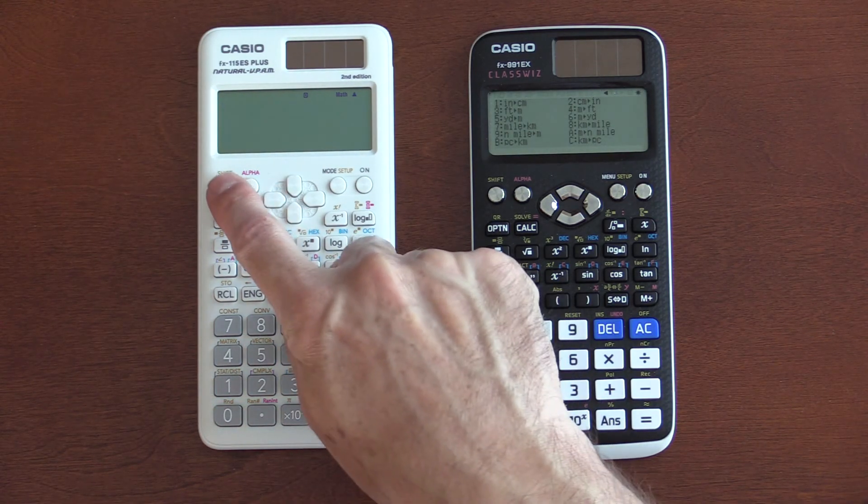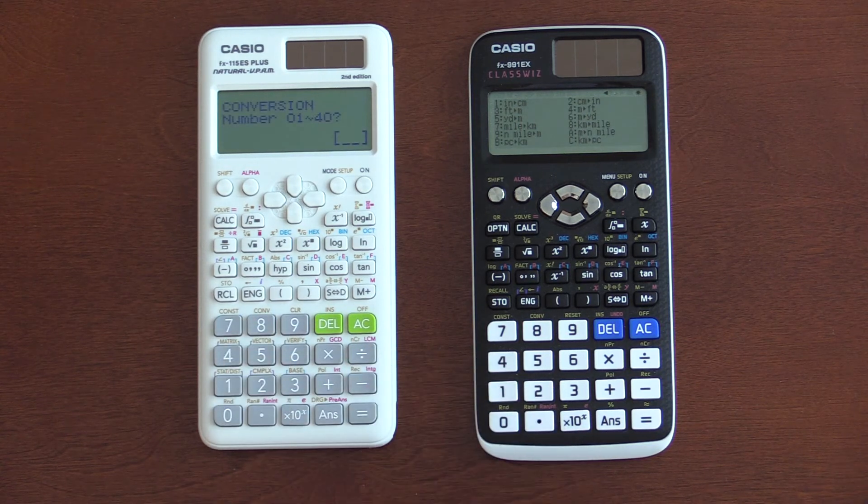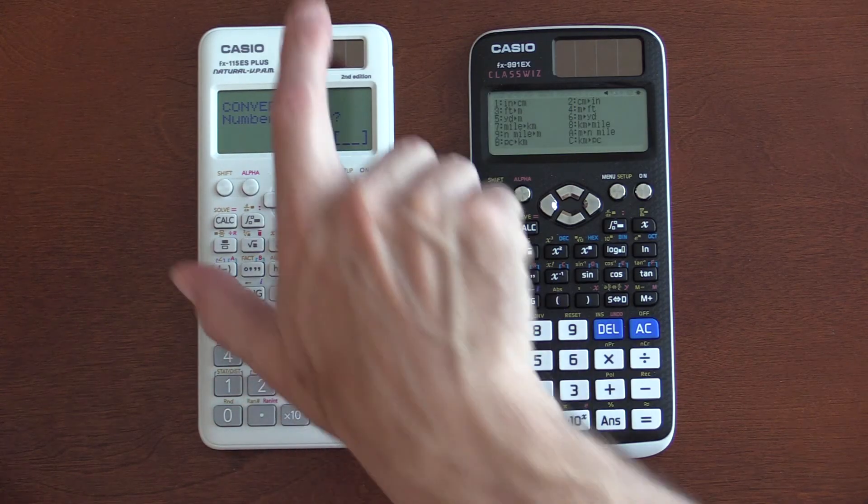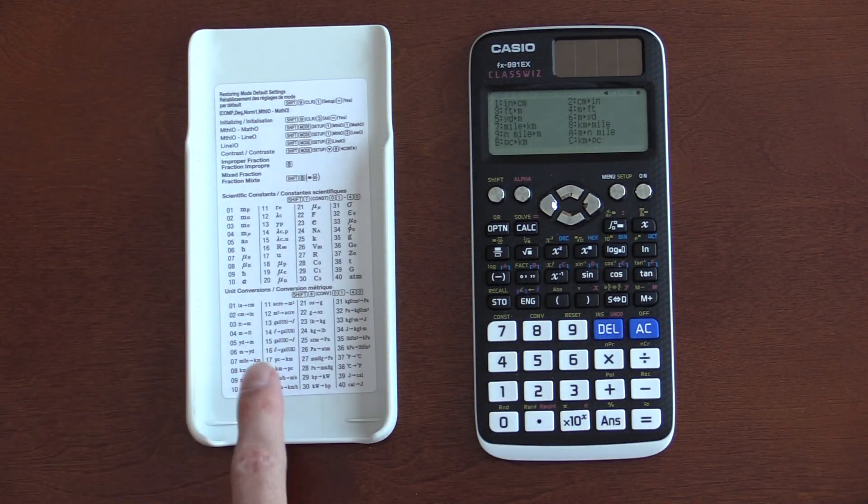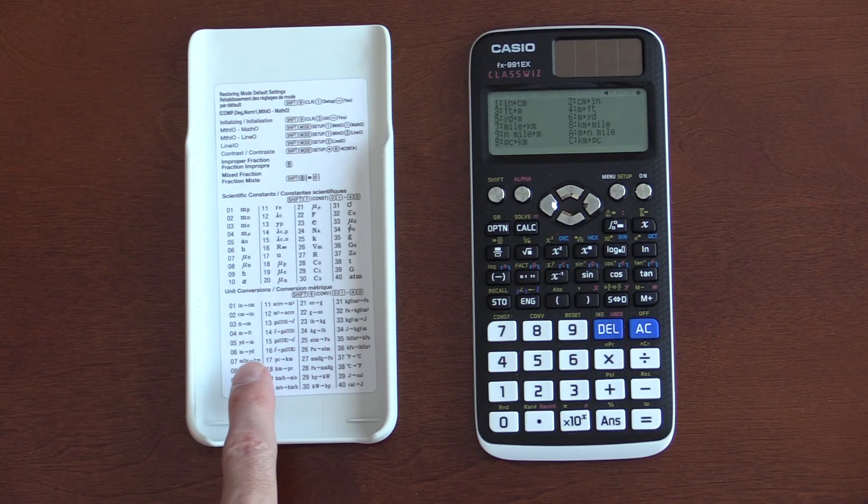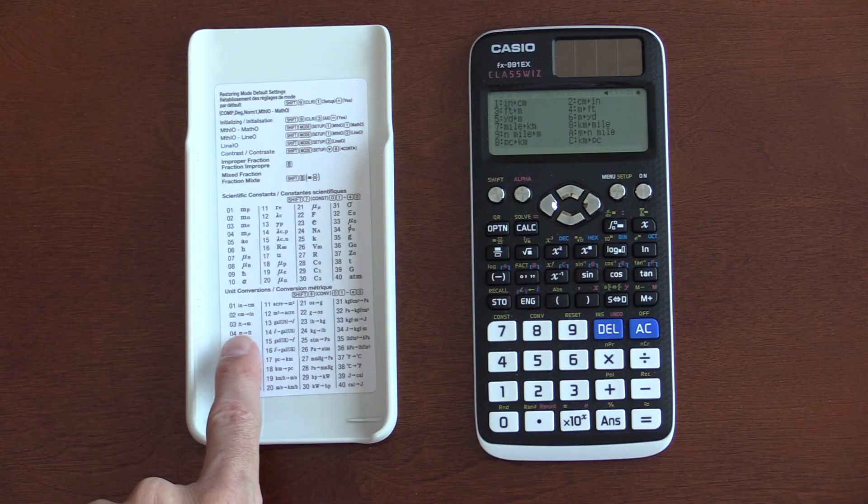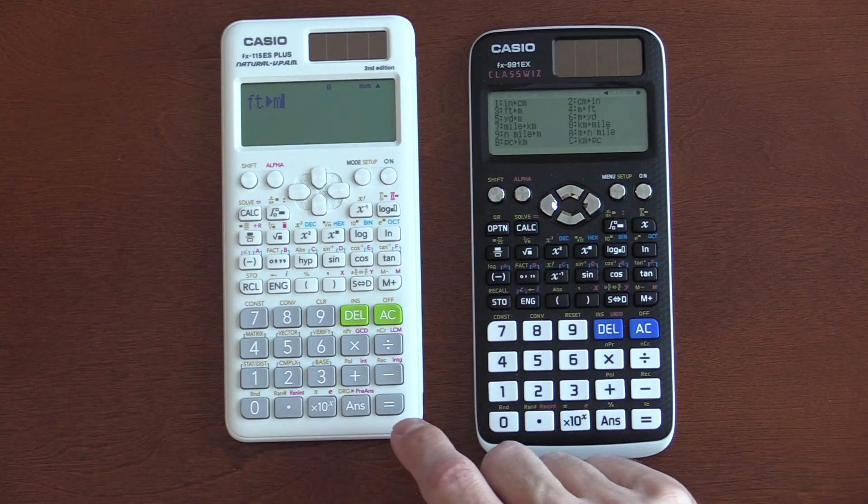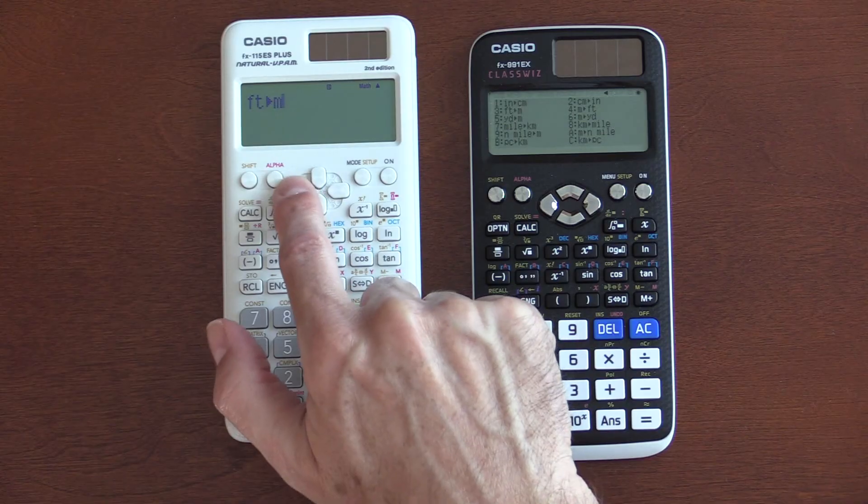On the ES, when you go into conversions, you have to know which type of conversion you're doing. So, in this case, you have to use the cover. And, you look at the cover and you find out, well, which one is it? So, let's say I was doing feet to meters. I would type in 03.